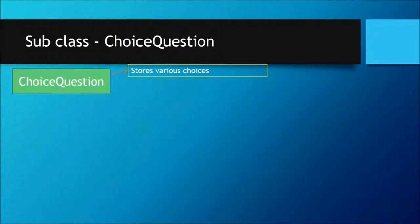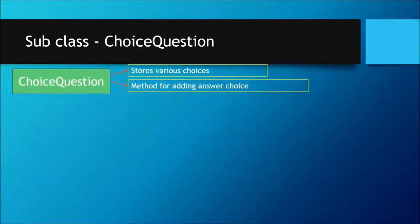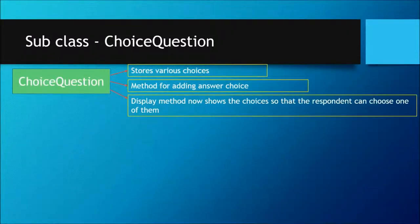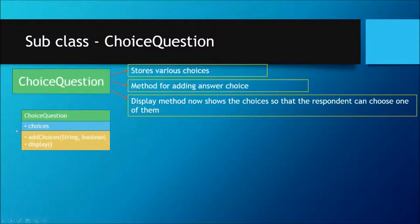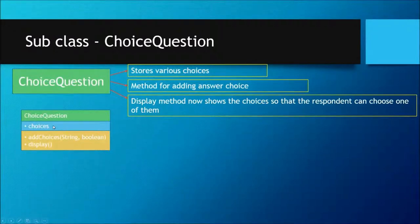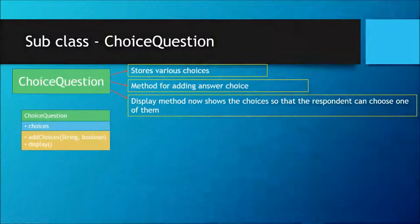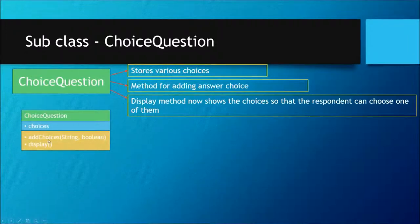What do we need to put in our ChoiceQuestion class? First, it needs to store various choices — A, B, C, D — for the multiple choice question. Second, we need to add a method for adding an answer choice. Third, we need a display method that shows the choices so the respondent can choose one. We can store choices as an ArrayList that will hold the different answer options for the question. The add choices method will take two arguments: a String for the choice, and a boolean indicating if it's the correct answer.